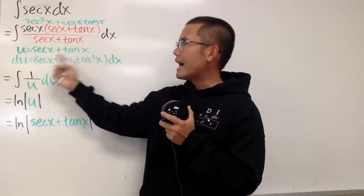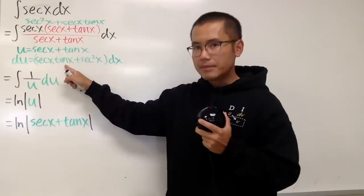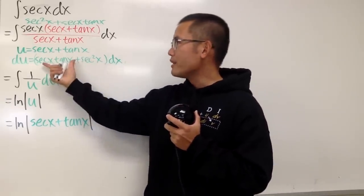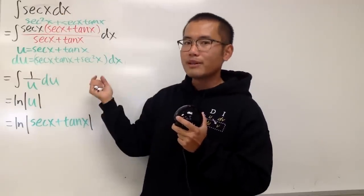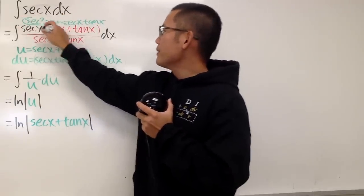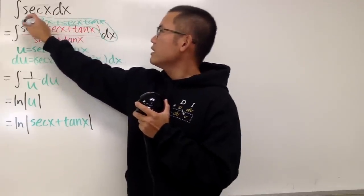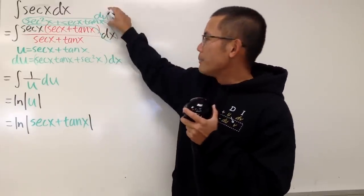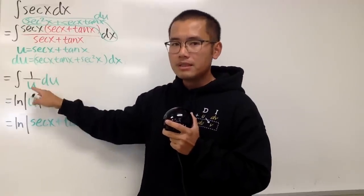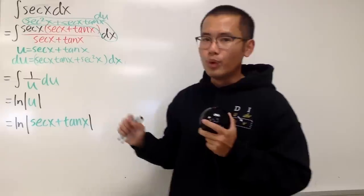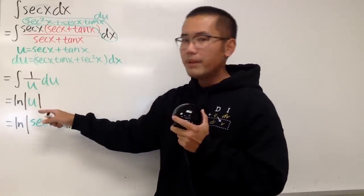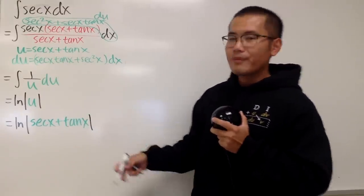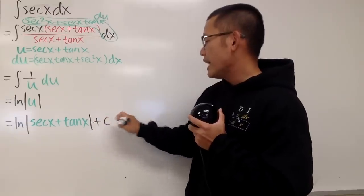If we differentiate the denominator, we get du = secant x tan x + secant squared x dx, which is exactly what we have in the numerator. So the whole numerator with dx is just du. In the u-world, we integrate 1/u, giving natural log absolute value of u, and substituting back we get ln|sec x + tan x| + C.